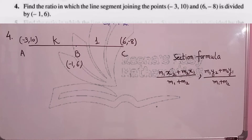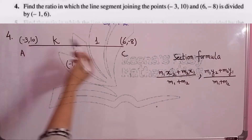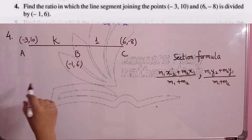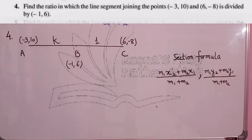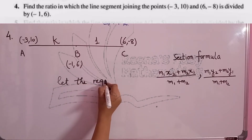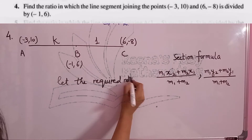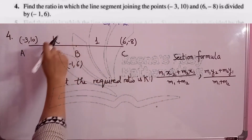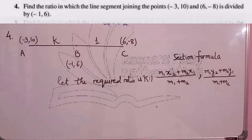Now question 4: find the ratio in which the point (-1, 6) divides the line segment joining (-3, 10) and (6, -8). In this question, the ratio is not given — we have to find it ourselves. So we let the required ratio be k:1. We will put k and 1 into the section formula and finally get the value of k.